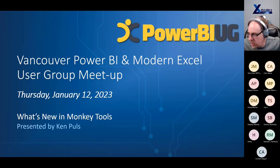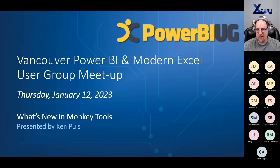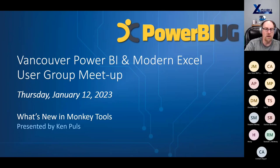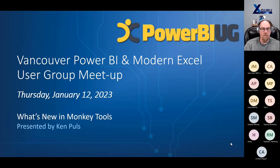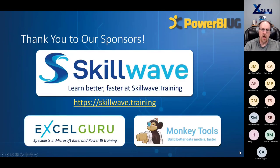So I'm going to get this started. It is five o'clock on the West Coast — I've moved this to an hour earlier. I see Christian is typing in the chat. I can't believe that you're making it here at this time in the morning for you, Christian. Thanks for coming. Welcome to the January edition of the Vancouver Power BI and Modern Excel user group meetup. My name is Ken Pulse, and I'm going to be doing the feature presentation today. But before we do that, I'm going to go through the standard stuff that we always do.